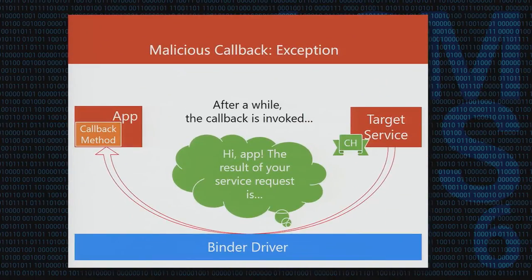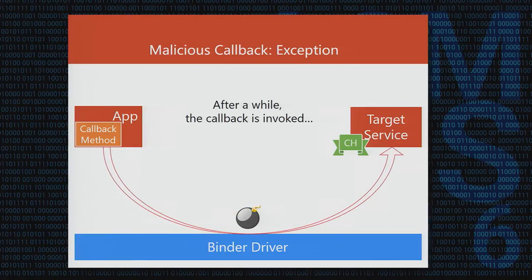The second attack measure is to throw an exception. In Android, an uncaught exception usually means a critical crash for a Java-based program. When the target service invokes the callback in a synchronous way, the malicious callback injects an unexpected exception which the target service cannot handle. This is because in current Android, some exceptions are left unhandled in the service implementations — a key observation we take advantage of.